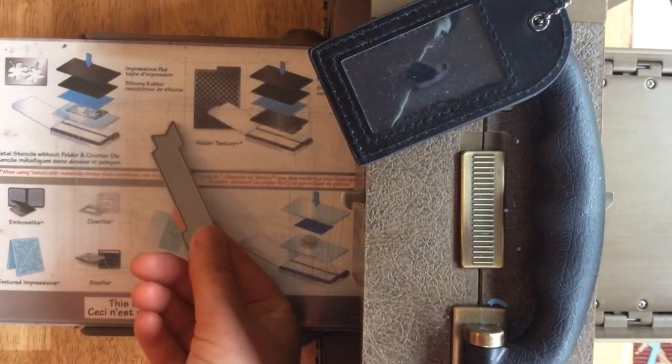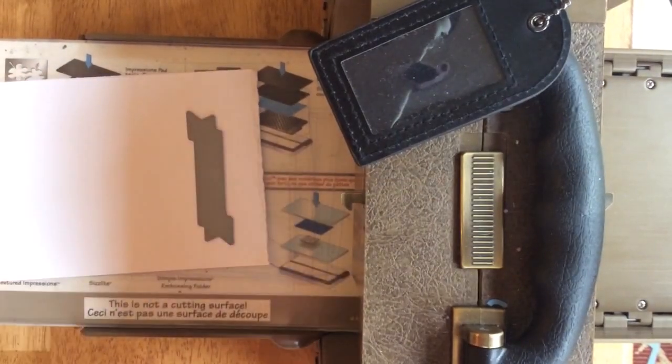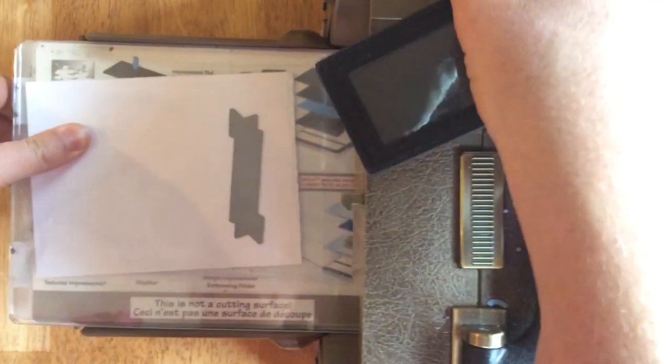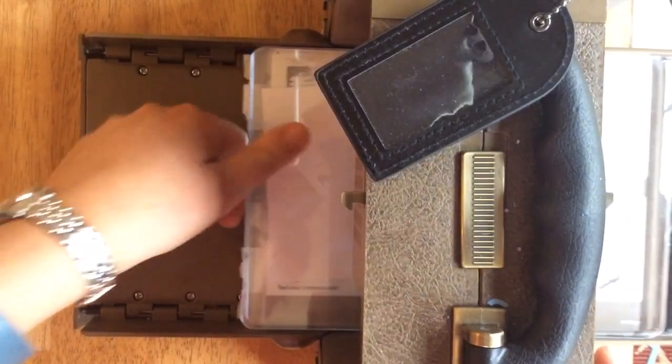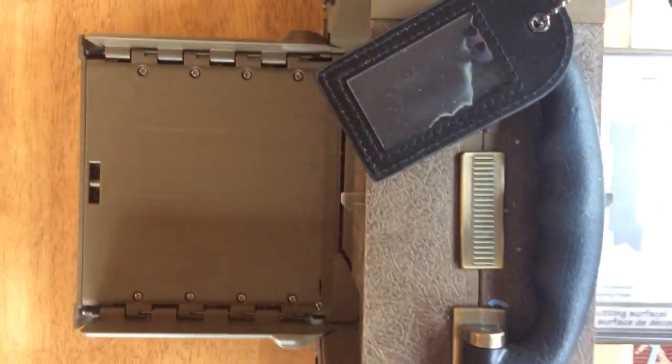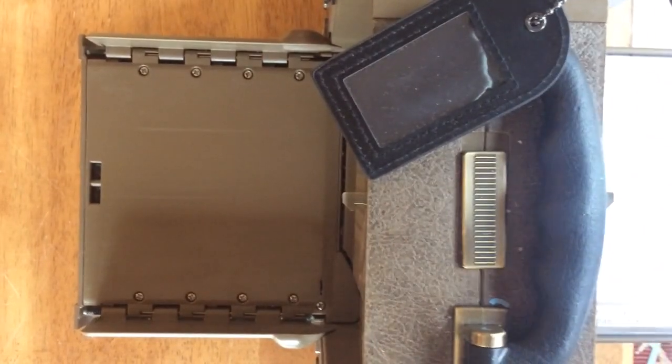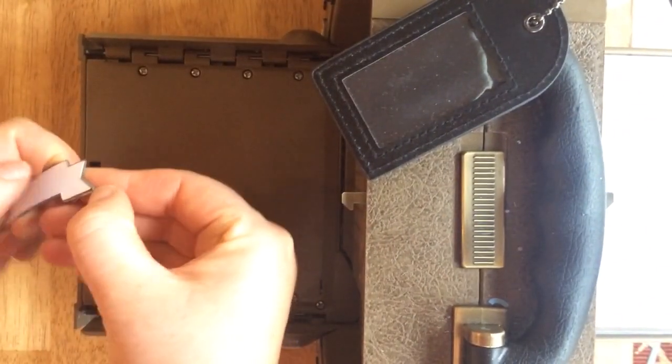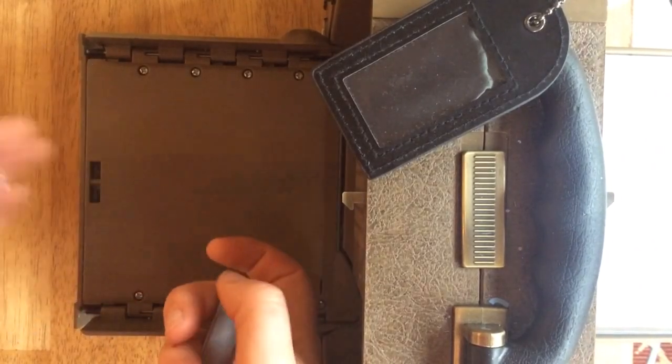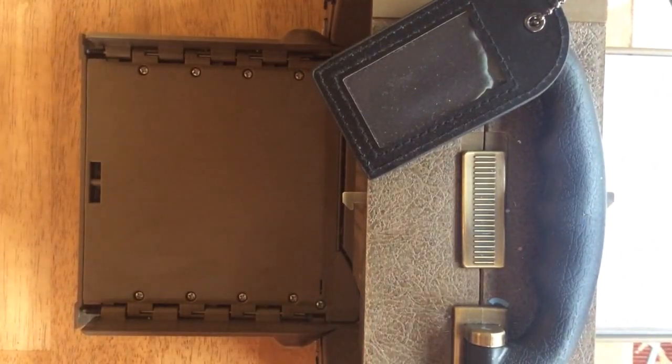This is a banner that goes across the window that I created with the dies. There's a stamp that coordinates and four different sentiments that coordinate as well to go on top of it. We're just going to put that aside since we're doing all of our die cutting right now.